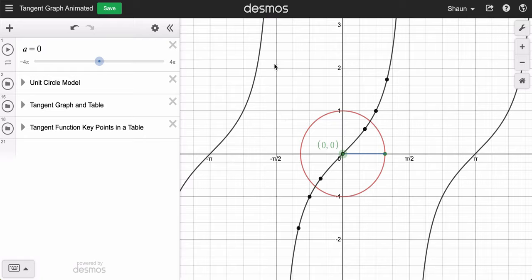And also you want to include the two vertical asymptotes at negative pi over 2 and pi over 2. And I'll include a folder here with the formulas for the asymptotes.